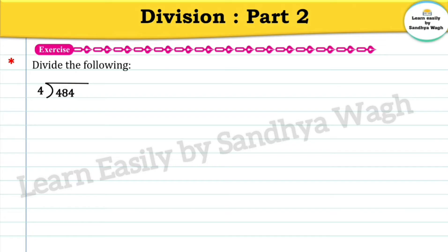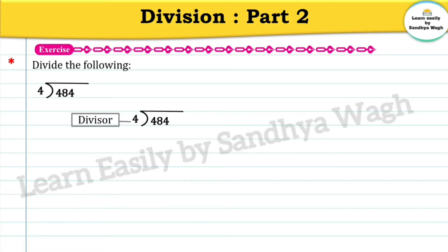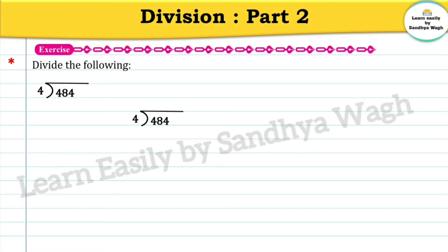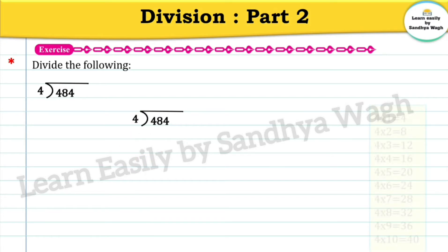Let's solve this exercise. Divide the following: 484 divided by 4. Here 484 is the dividend and 4 is the divisor. 484 has three digits. So let us learn how to divide a three-digit number by a one-digit number. We start by dividing the left most digit of the dividend, which is 4, by the divisor 4.